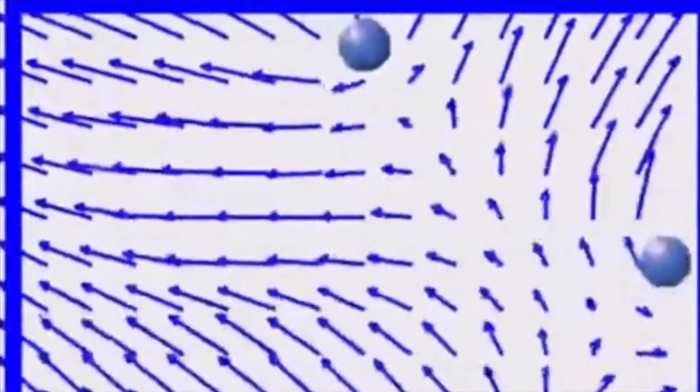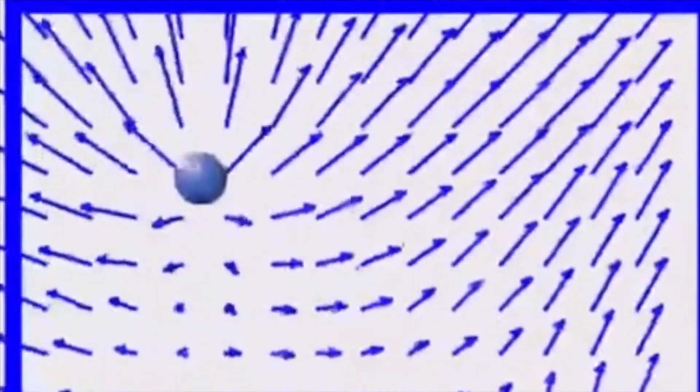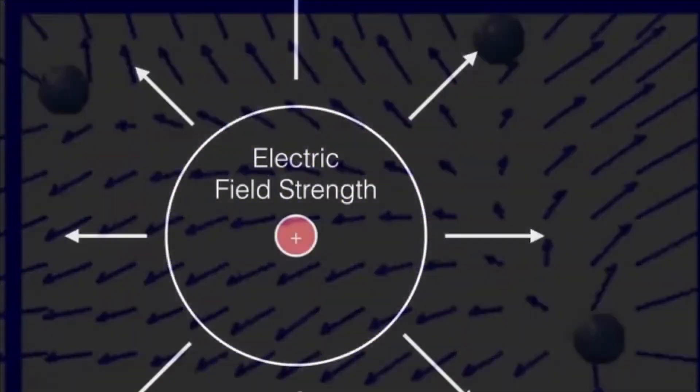You might have figured out that we added positive charges because the fields are moving away from each other. Five coulomb charges, they are really applying a force on each other.